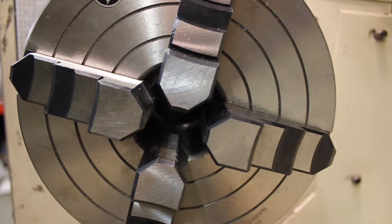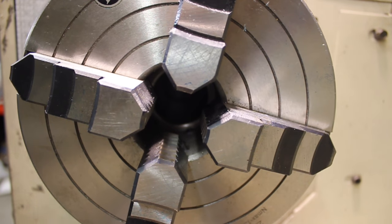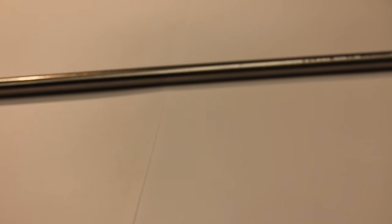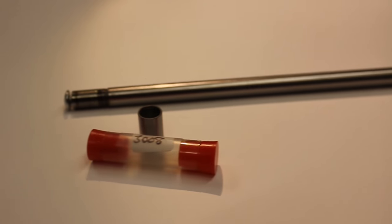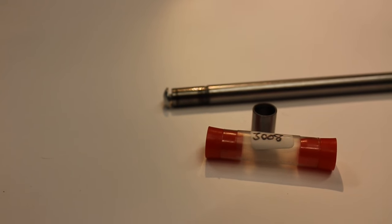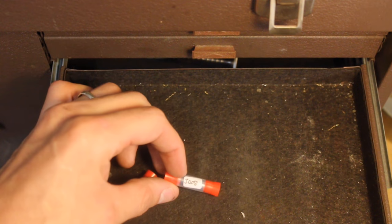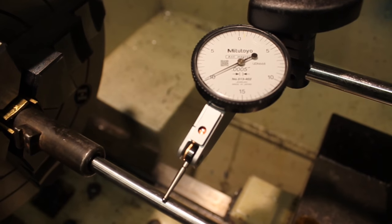Secondly, the three-jaw chuck does not allow for independent adjustment of each jaw so that the bore can be zeroed to the lathe's center axis. The barrel is indicated into zero by using a precision ground range rod. A bushing that just fits the barrel is placed onto the range rod.